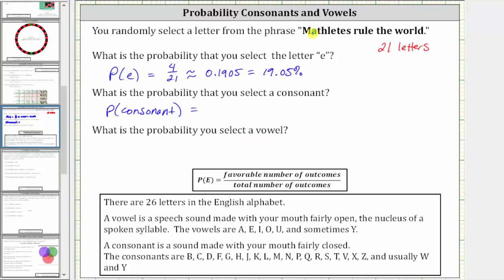So the vowels are A, E, there's another E, U, and E, E, and O. So there are one, two, three, four, five, six, seven vowels. Let's make a note of that, seven vowels.